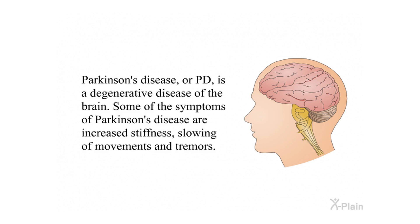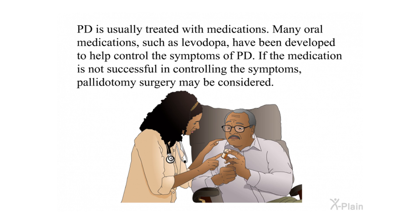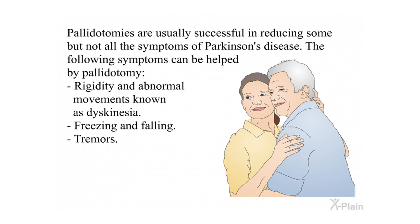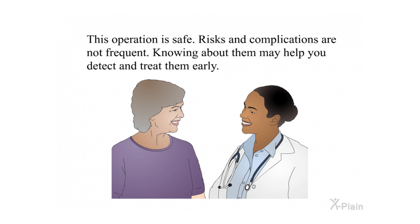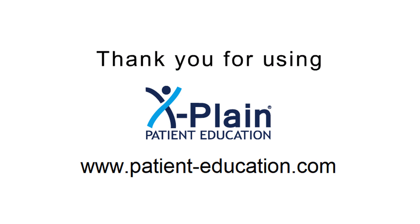Summary. Parkinson's disease, or PD, is a degenerative disease of the brain. Some of the symptoms are increased stiffness, slowing of movements, and tremors. PD is usually treated with oral medications such as levodopa; if medication is not successful, pallidotomy surgery may be considered. Pallidotomies are usually successful in reducing some but not all symptoms, including rigidity, dyskinesia, freezing, falling, and tremors. This operation is safe; risks and complications are not frequent, but knowing about them may help you detect and treat them early.